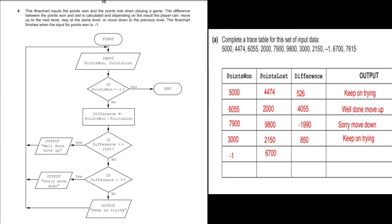Starting the trace table: the first input data is points won 5000 and points lost 4474. Is points won equal to minus 1? No. So difference equals 5000 minus 4474, which is 526. Is difference greater than or equal to 1000? No. Is difference less than 0? No. So we output: keep on trying.